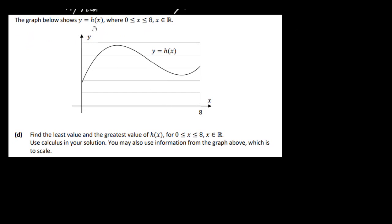The graph shows y equals h of x between 0 and 8, and it's a cubic graph. We need to find the least value and the greatest value of h of x between 0 and 8 using calculus. There are four points to look at: the local maximum, the local minimum, and the two endpoints at x equals 0 and x equals 8. For completeness, I'm going to work out all four points.